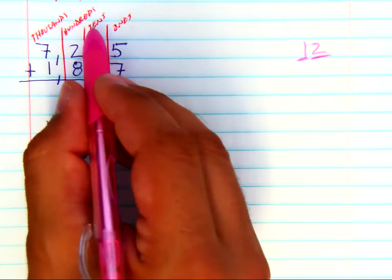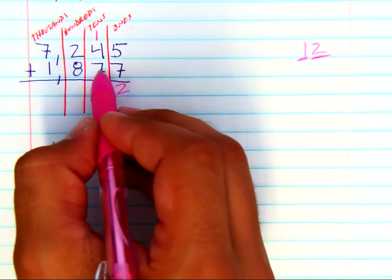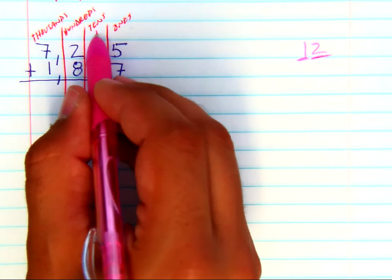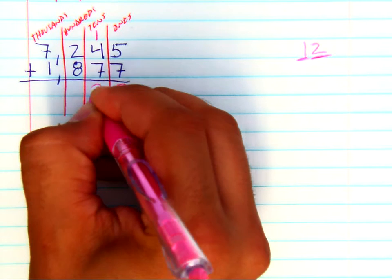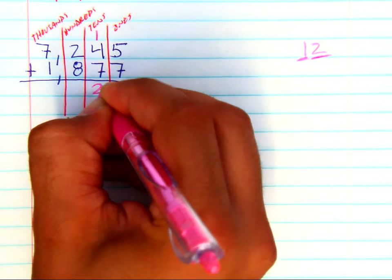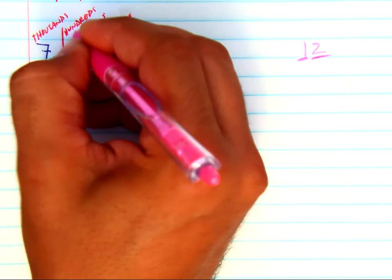So now we add the tens together. 7, 8, 9, 10, 11, 12. We get 12 again. The two goes here. And bring over that one.